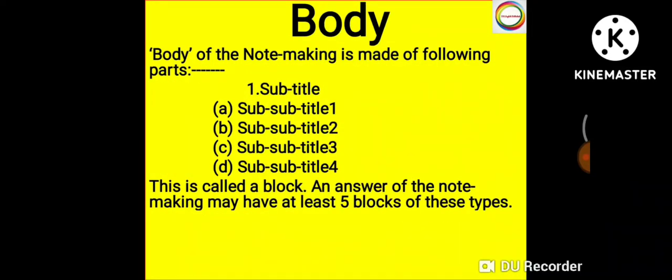The body of note-making is made of following parts: subtitle, then sub-subtitle one, sub-subtitle two, sub-subtitle three, sub-subtitle four. This is called a block. An answer of note-making may have at least five blocks of these types. You should have at least four to five blocks in your note-making.